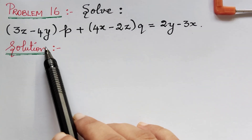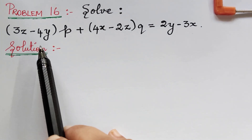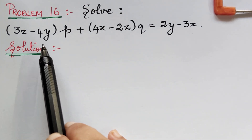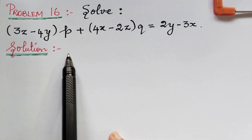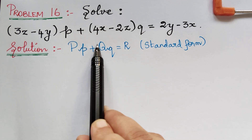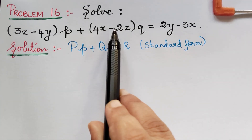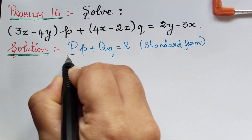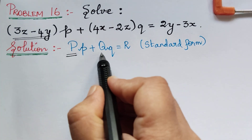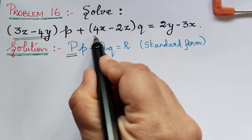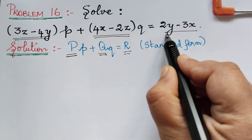As the first step, we have to compare the given equation with the standard form of the Lagrange's equation and obtain the values of capital P, capital Q, and capital R. The standard form is Pp + Qq = R. On comparing, we get P = 3z - 4y, Q = 4x - 2z, and R = 2y - 3x.